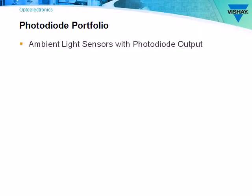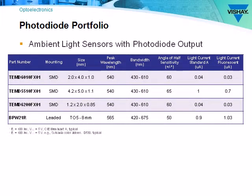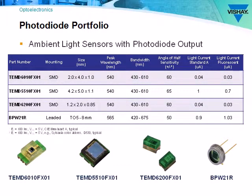The photodiode portfolio also includes leaded and surface mount devices. The leaded device, the BPW21R, is packaged in a hermetically sealed TO5 metal package, designed to operate in particularly hostile environments. All of these sensors have a peak sensitivity from 540 to 565 nanometers, which matches our eyes' peak sensitivity.